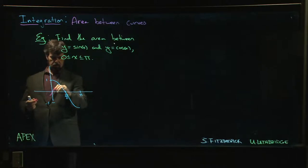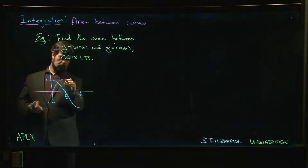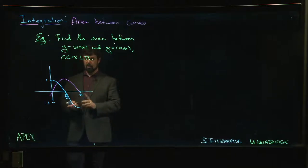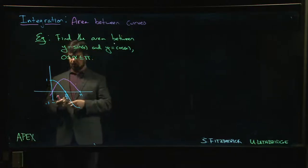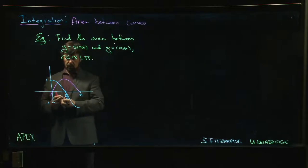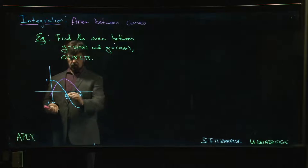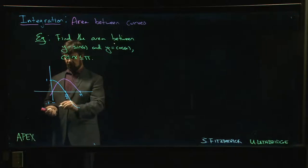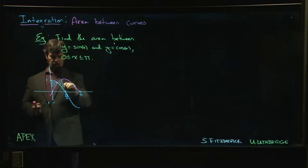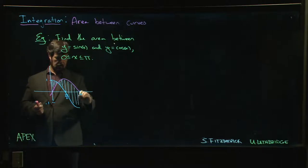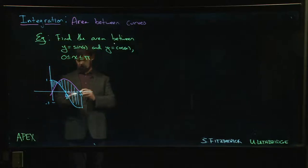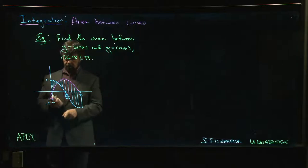What does sine do on this interval? It starts at 0, goes up, peaks at π over 2, comes back down. Okay, so now we can see why this is maybe not such a trivial problem. What is the area that's between them? This region here is between the two curves. All of this is between the two curves, right, until we get to π.